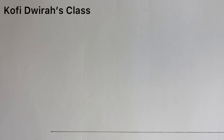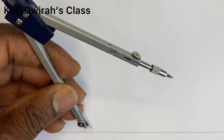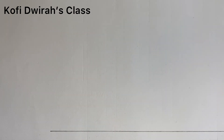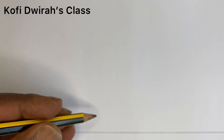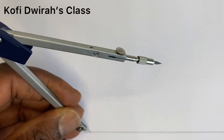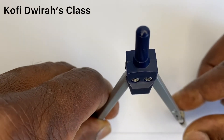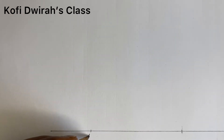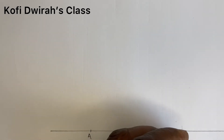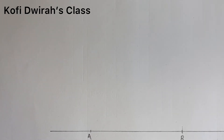So we first draw a line like this, then we measure 80 millimeters, which is 8 centimeters. We consider this point and mark this side. From here we mark our 80 millimeter line. This means we have this point to be point A and then we have point B. After drawing line AB, which is 8 centimeters or 80 millimeters, we are going to draw a line.